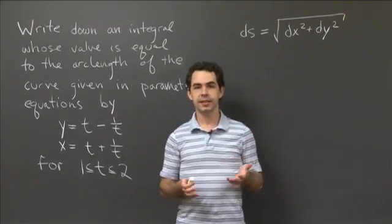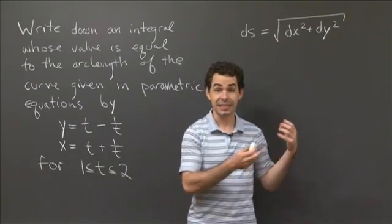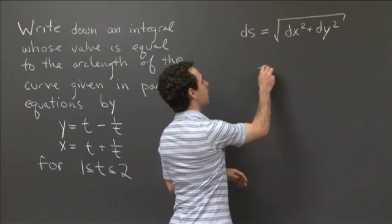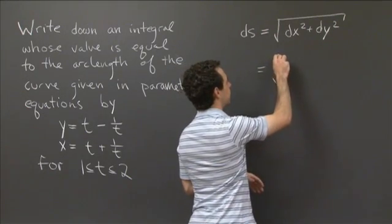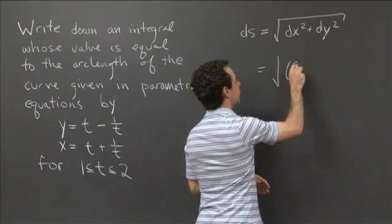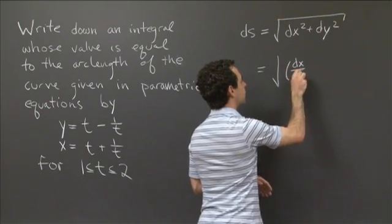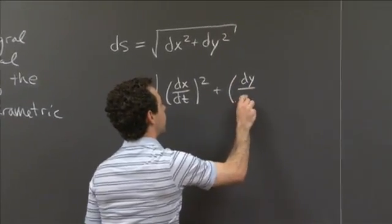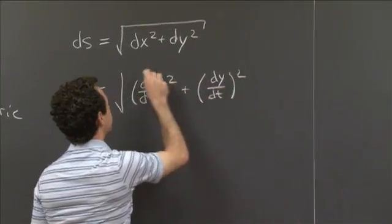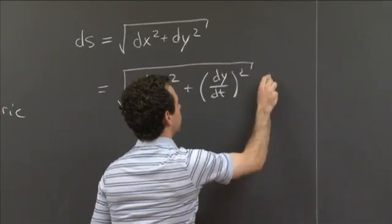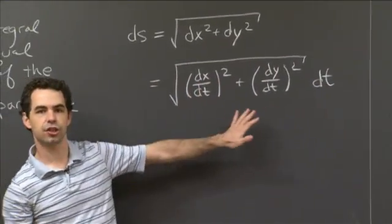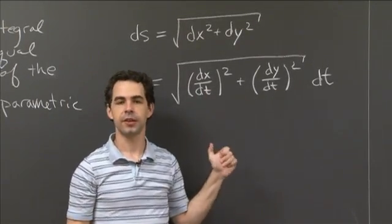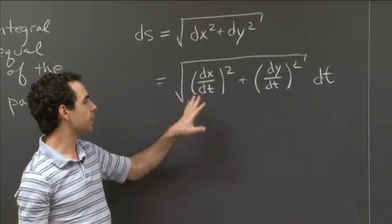So what we actually want to do in this case is factor out a dt from everywhere. So if you factor out a dt², what this becomes is that you get √((dx/dt)² + (dy/dt)²) dt. OK, so this is just a little algebraic manipulation involving differentials.